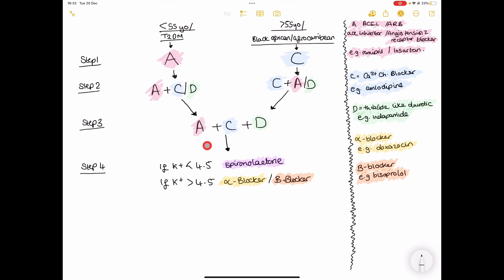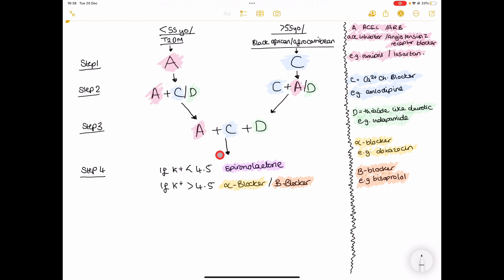And at this point, if the blood pressure is still not controlled, it's still not at a healthy level, then you want to make sure at this point you reconfirm the blood pressure, check that the patient doesn't have postural hypotension, and discuss adherence. Make sure that they're definitely taking the medication. So once all of that is confirmed, you want to check your patient's potassium levels.